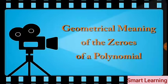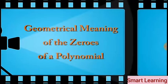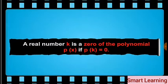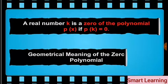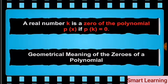Geometrical meaning of the zeros of a polynomial. We know that a real number k is a zero of the polynomial p of x if p of k is equal to zero. Now we will see the geometrical meaning of the zeros of a polynomial.